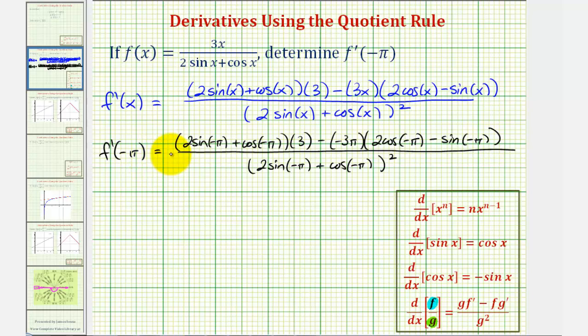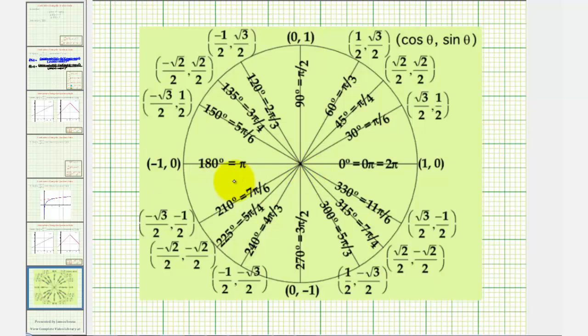Now we'll determine the value of cosine negative pi and sine negative pi using the unit circle. If we wanted to sketch negative pi radians, we would start here and then rotate clockwise pi radians to here. So this would be the terminal side of negative pi radians. On the unit circle, x equals cosine theta and y equals sine theta. So cosine negative pi equals negative one, and sine negative pi equals zero.